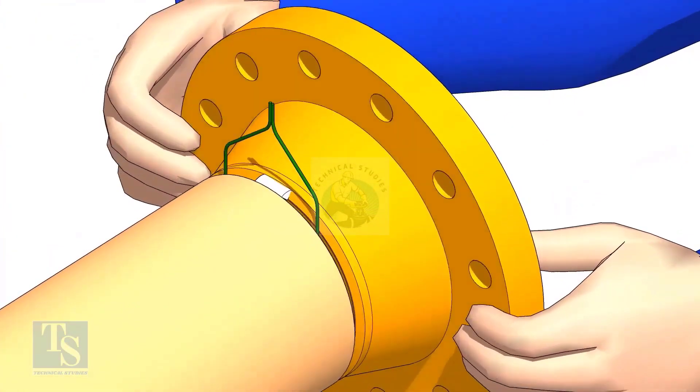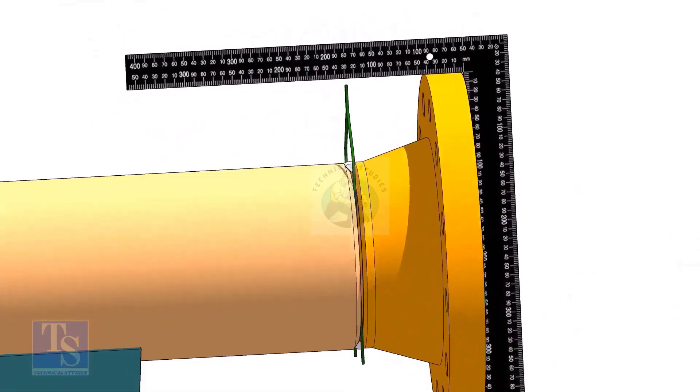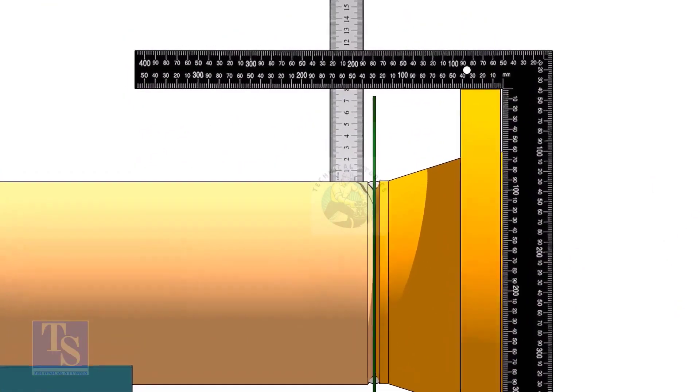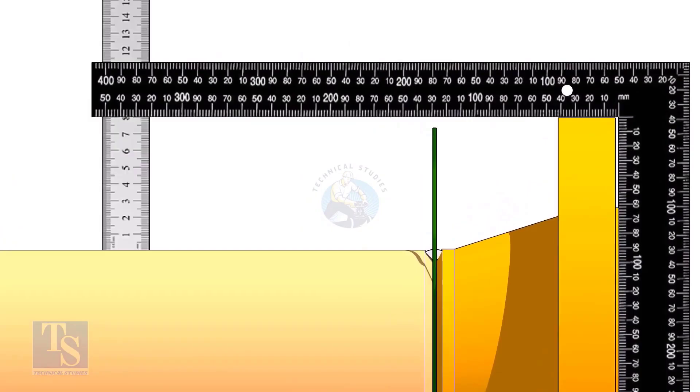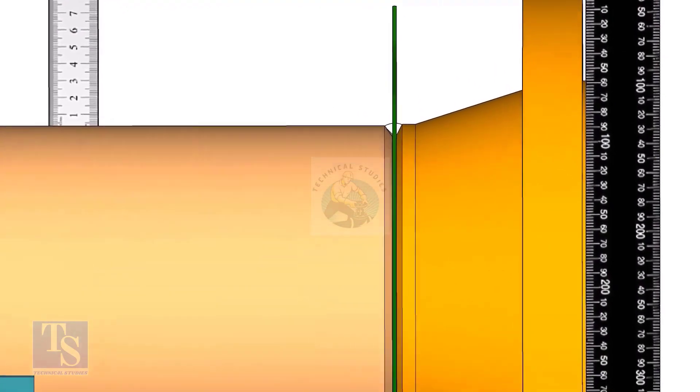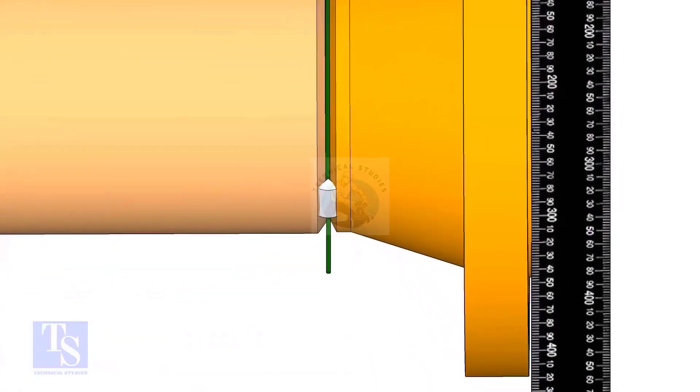Hold the flange with a gap rod in the joint. Tack weld on top side of the joint. Check the squareness of flange face to the pipe as shown. Tack weld at the bottom side of the joint.